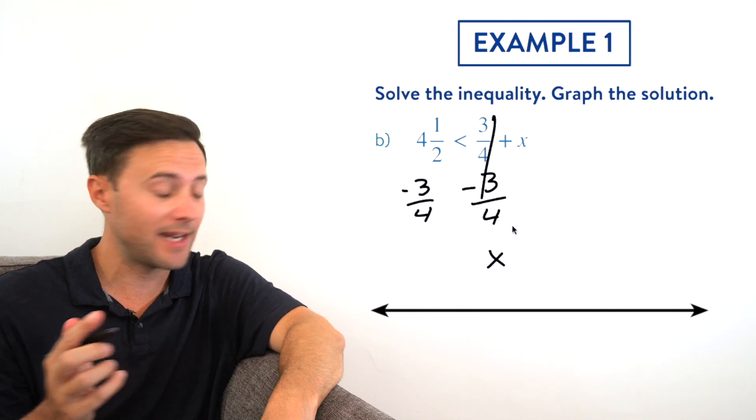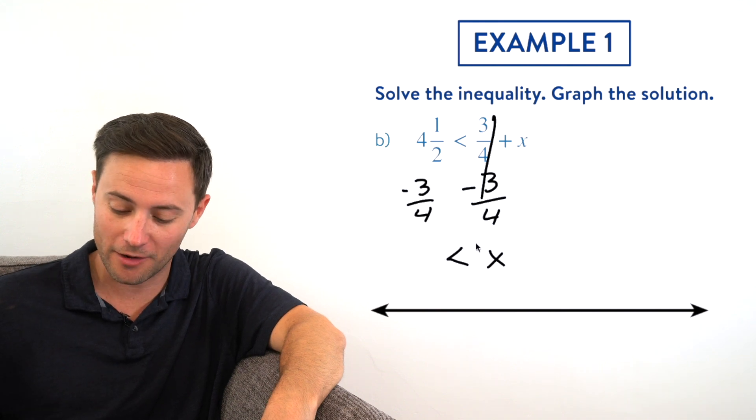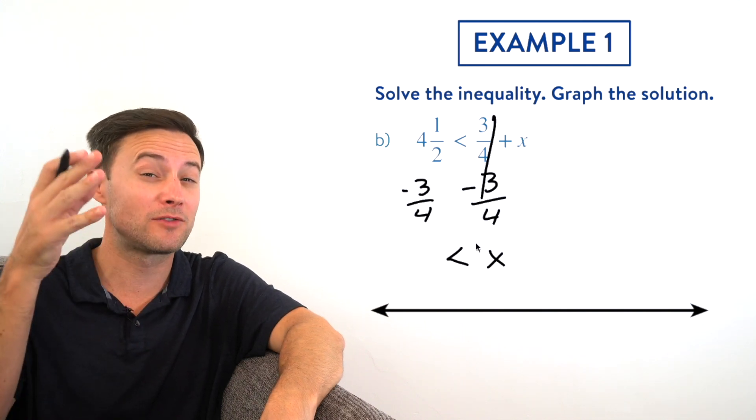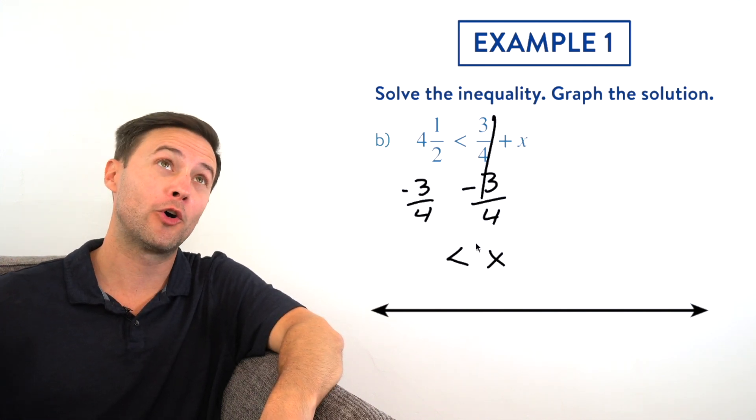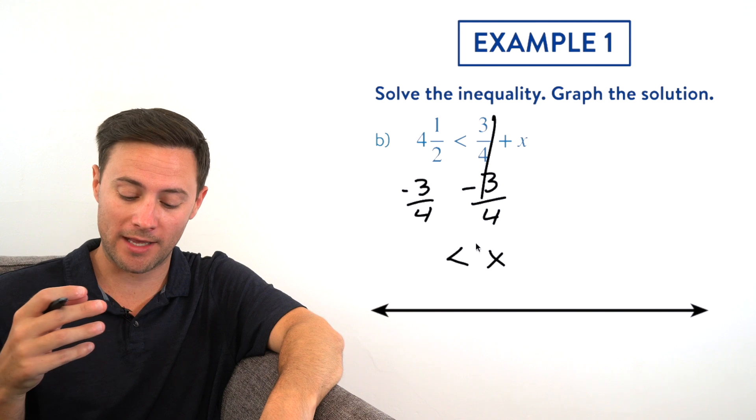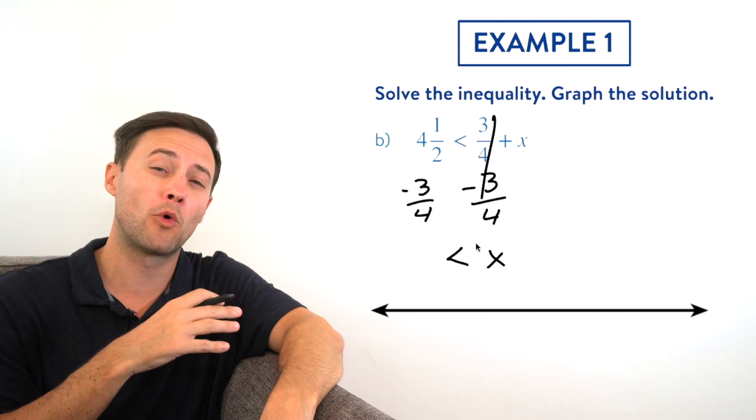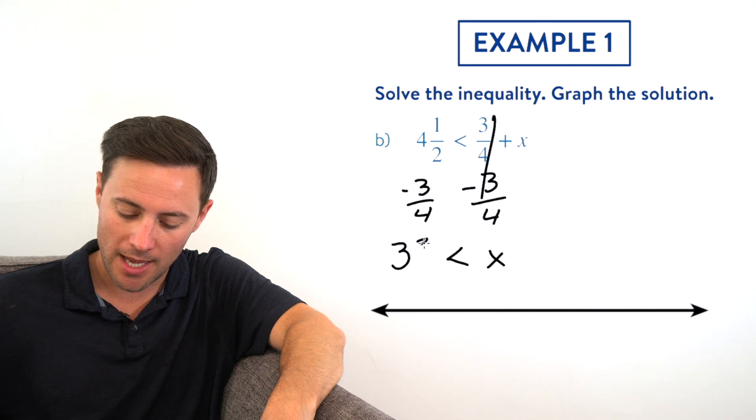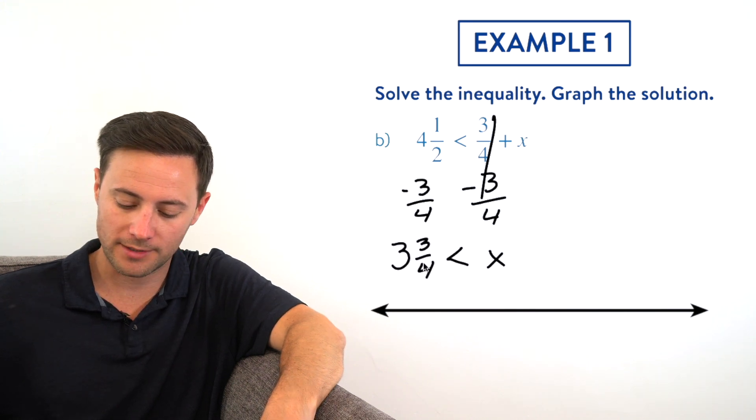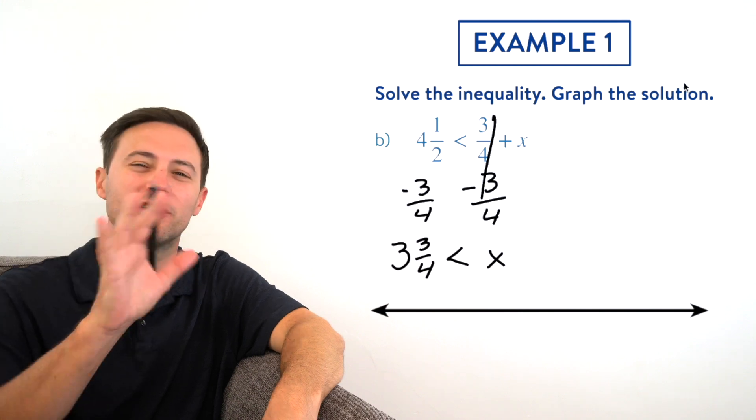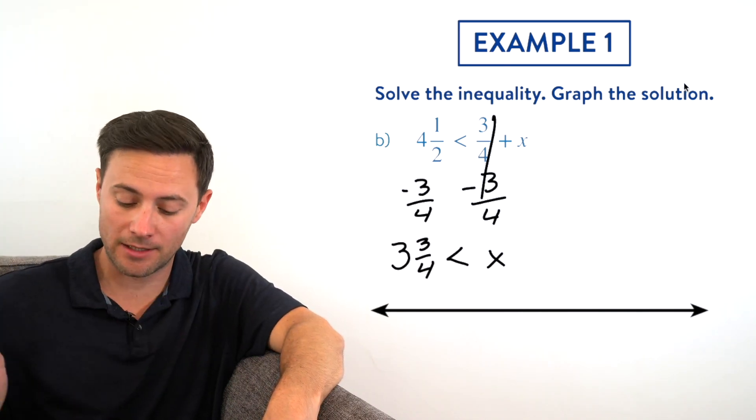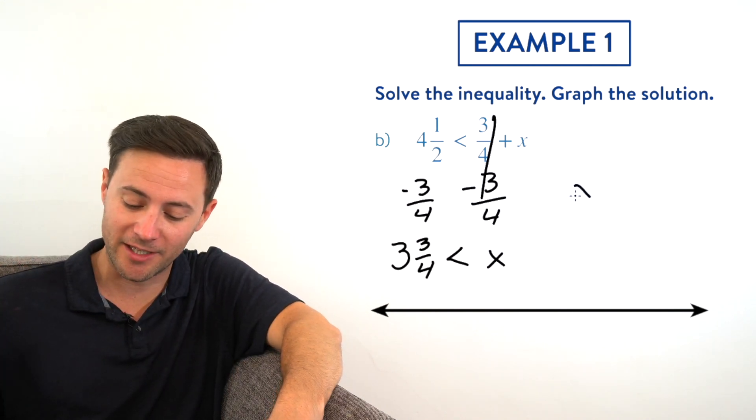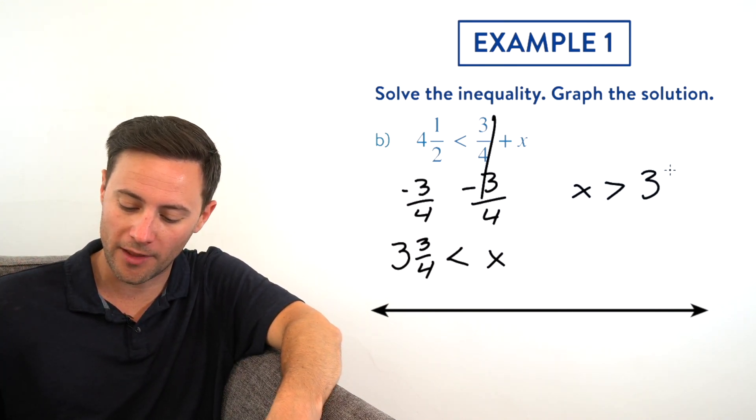We are left with x on the right side, greater than 4.5 minus 3.4. Well, a half is the same as 0.4, so if we take a half away, that gets us down to 4.4, and then we would need to take one more fourth away, and that would leave us with 3 and 3 fourths. Now I would recommend just rewriting it with your variable on the left side. So instead of 3 and 3 fourths is less than x, we can say x is greater than 3 and 3 fourths.